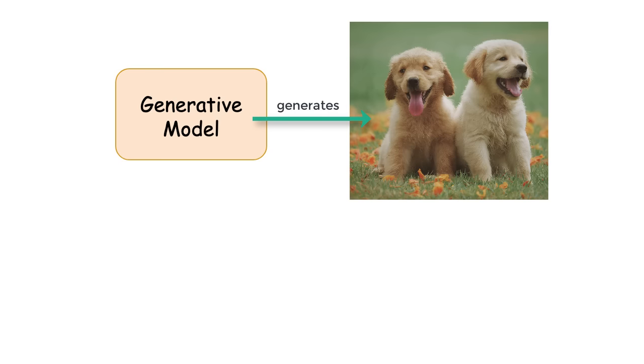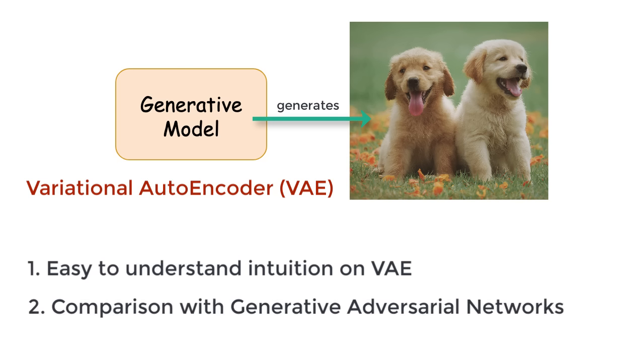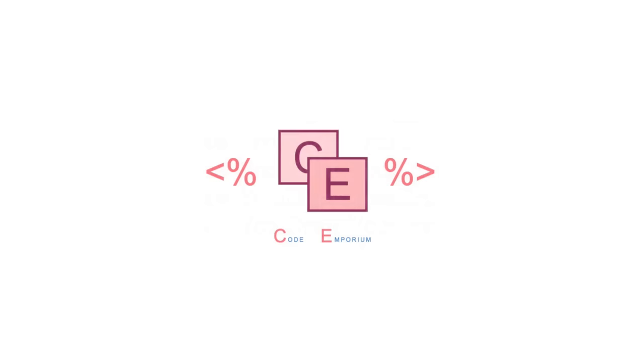In this video, we're going to go through a particular type of generative model called a variational autoencoder, or a VAE. The explanation will be twofold. I'll start with an easy to understand intuition on VAEs. Once we have a firm understanding of them, then we'll compare it to other types of generative models that have been hogging the spotlight recently, generative adversarial networks, GANs.